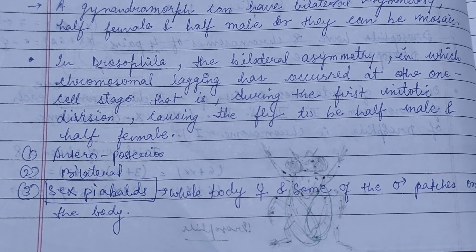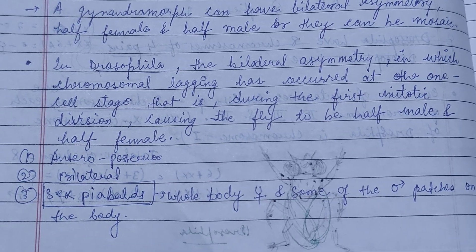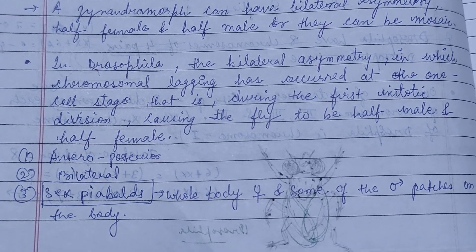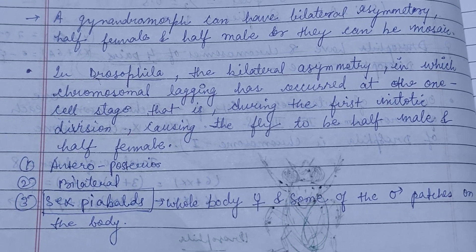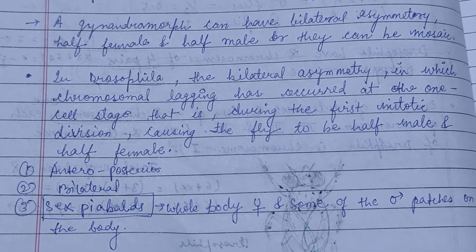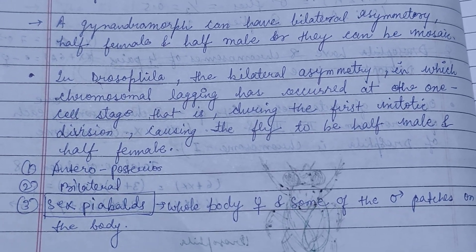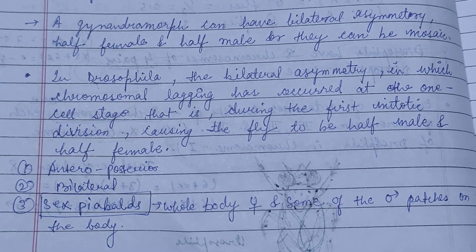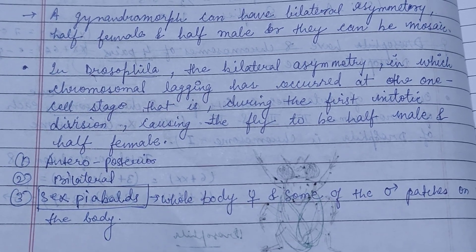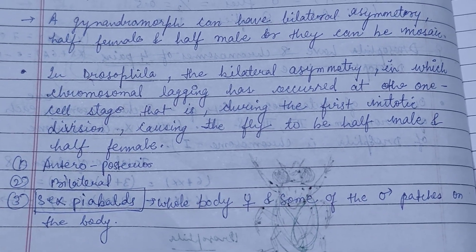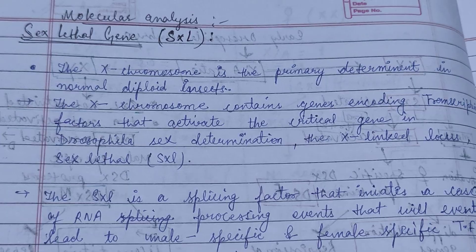In Drosophila, the bilateral asymmetry in gynandromorphs occurs due to X chromosome lagging at the one-cell stage, that is during the first mitotic division, causing the fly to be half-male and half-female. It may be anterior-posterior in position. Bilateral gynandromorphs also show patchwork patterns where the whole body of the female has some male patches on the body.